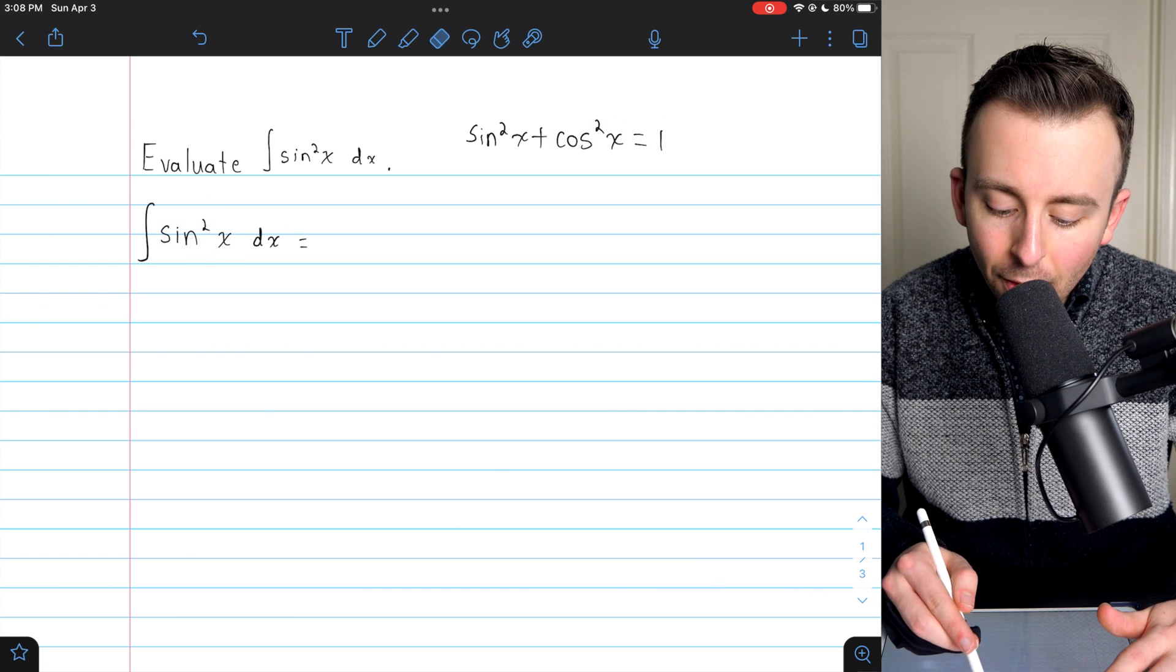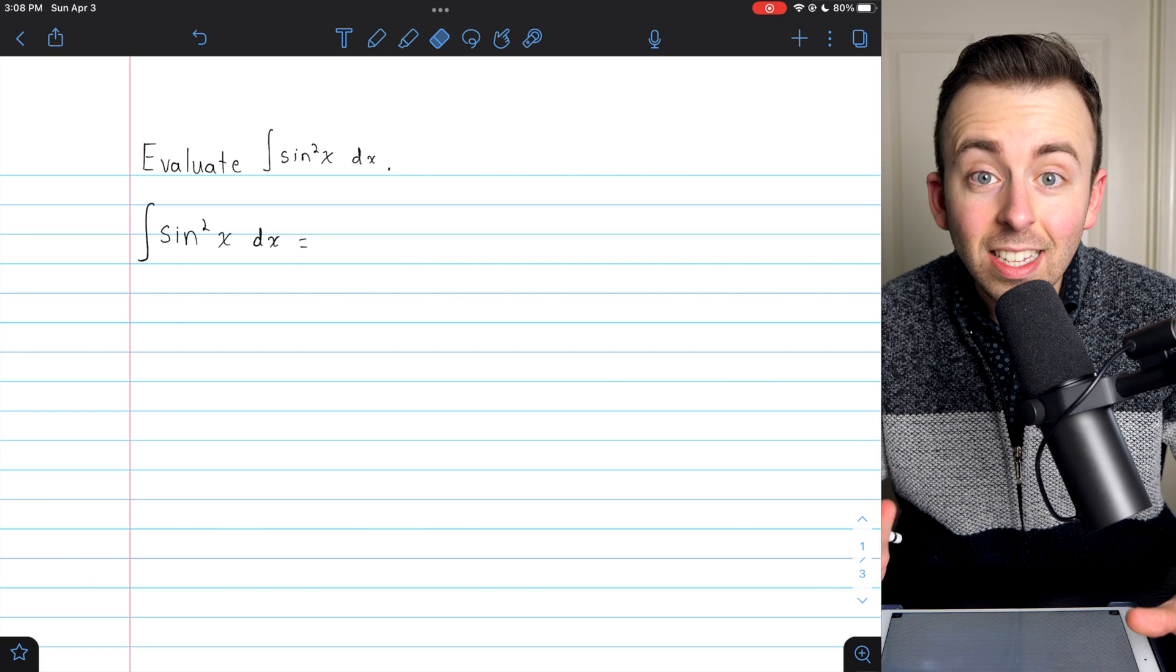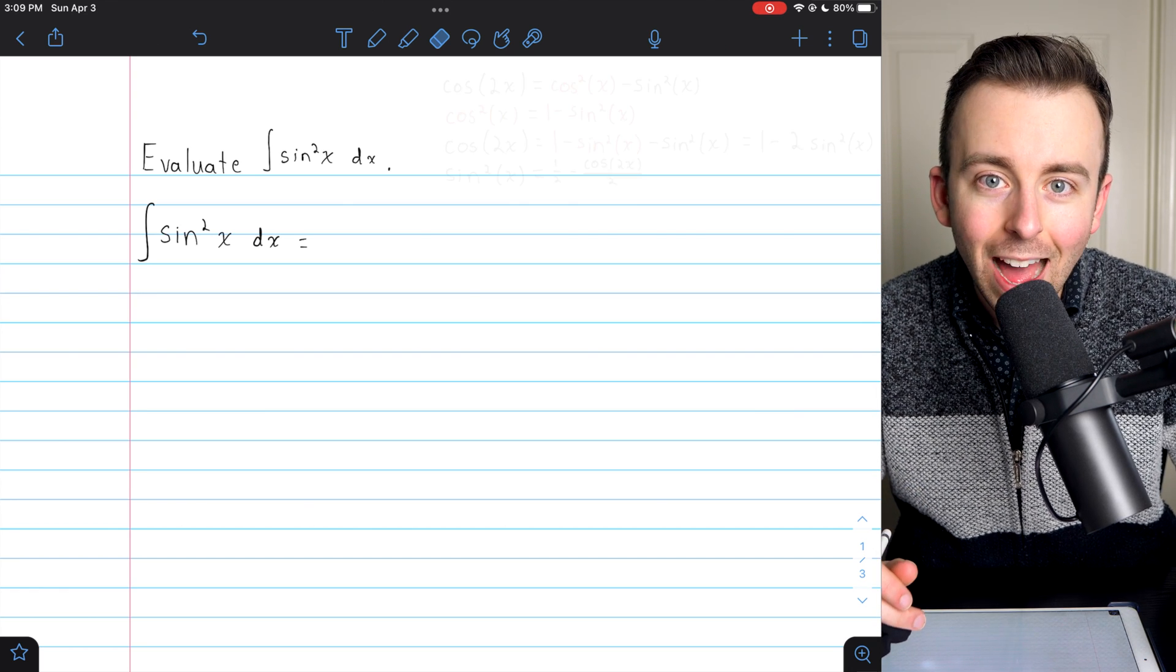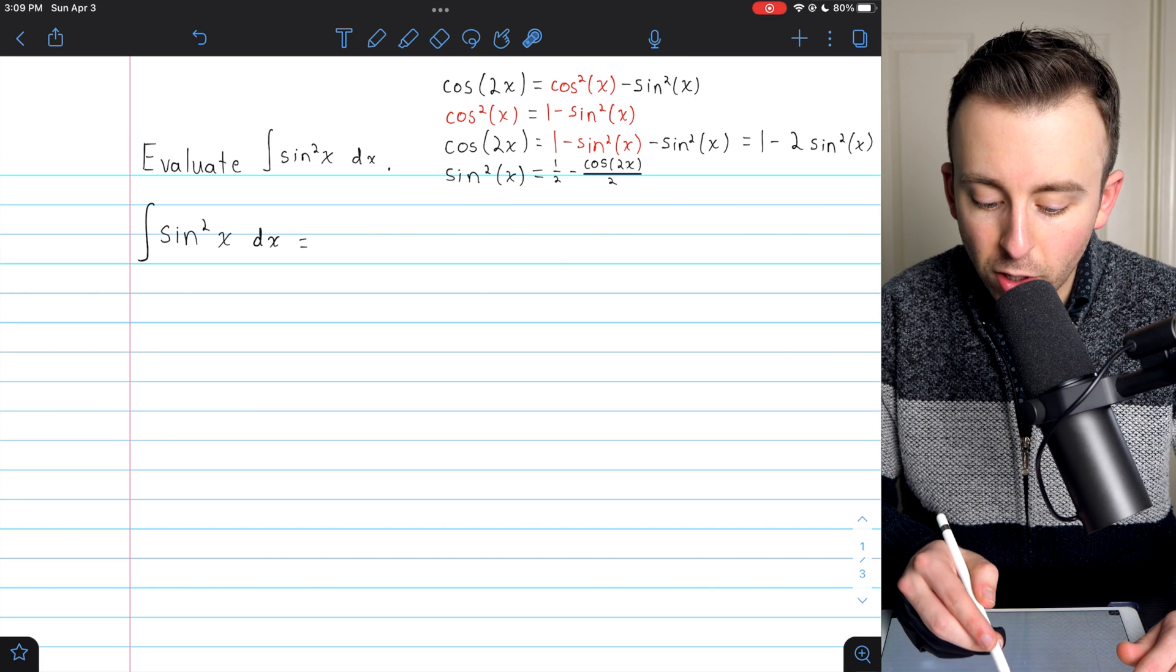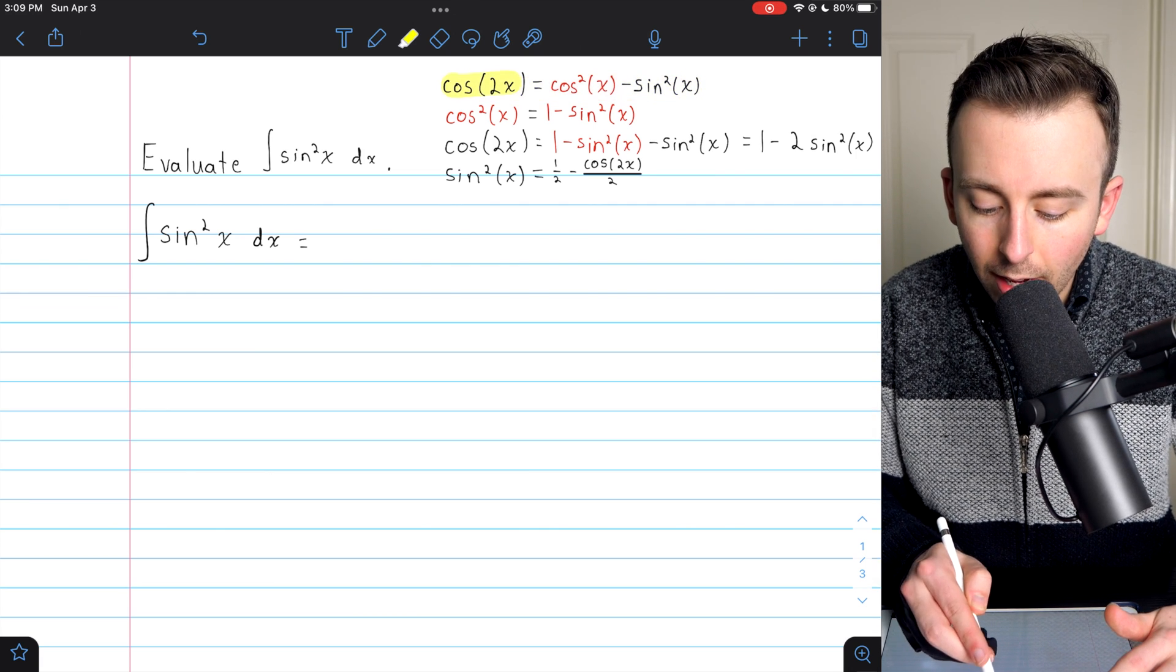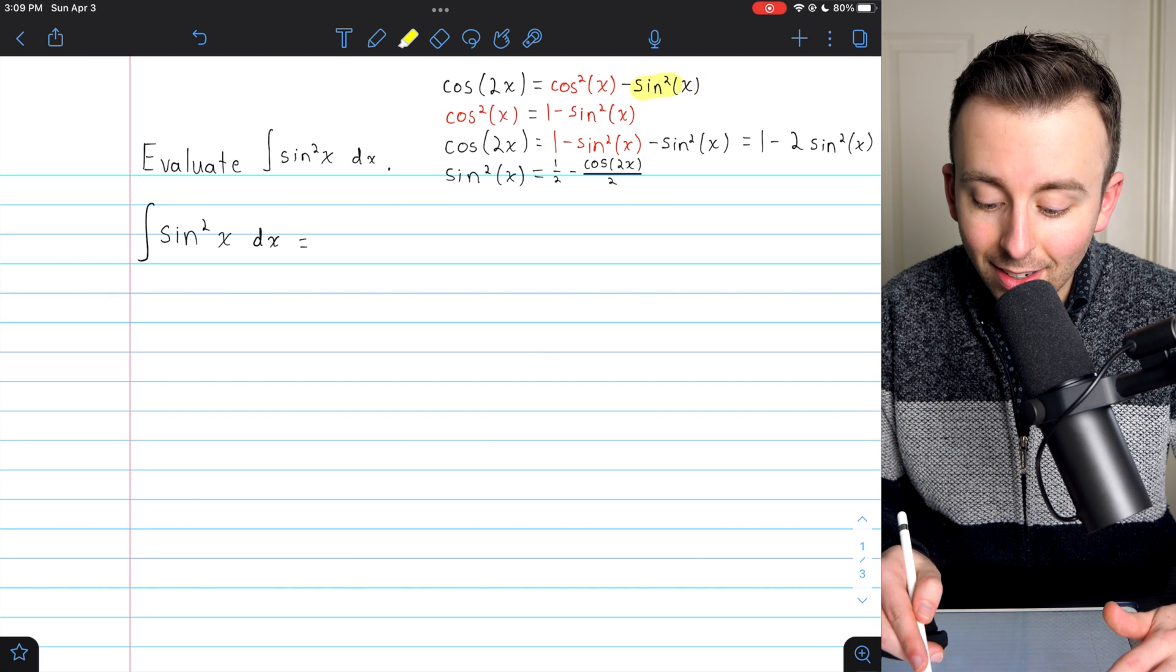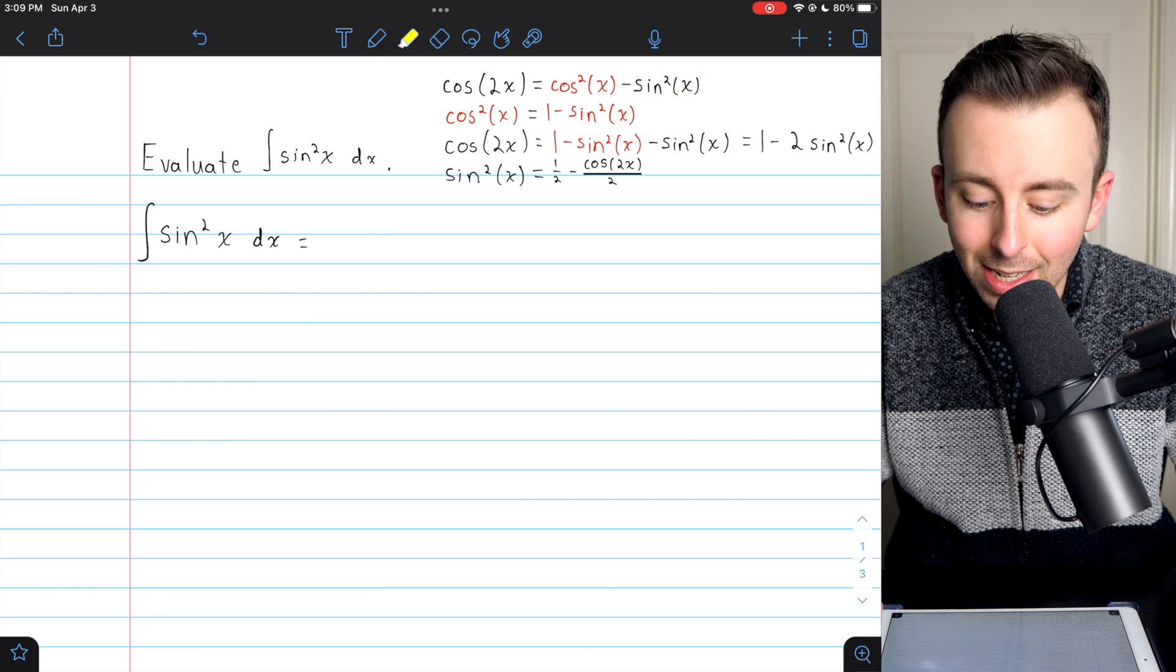There is, however, another identity that involves sine squared, and that's the double angle identity. If we combine that with the Pythagorean identity, we'll see something really cool happen. Here it is all written out. The first line is the double angle identity: cosine of 2x is cosine squared x minus sine squared x. We've got that sine squared, so that's why we might investigate it for this particular problem.